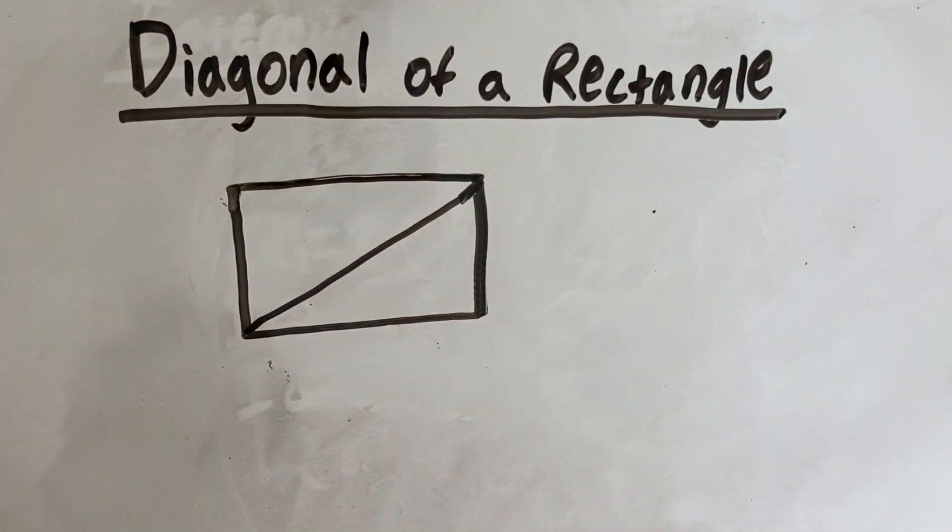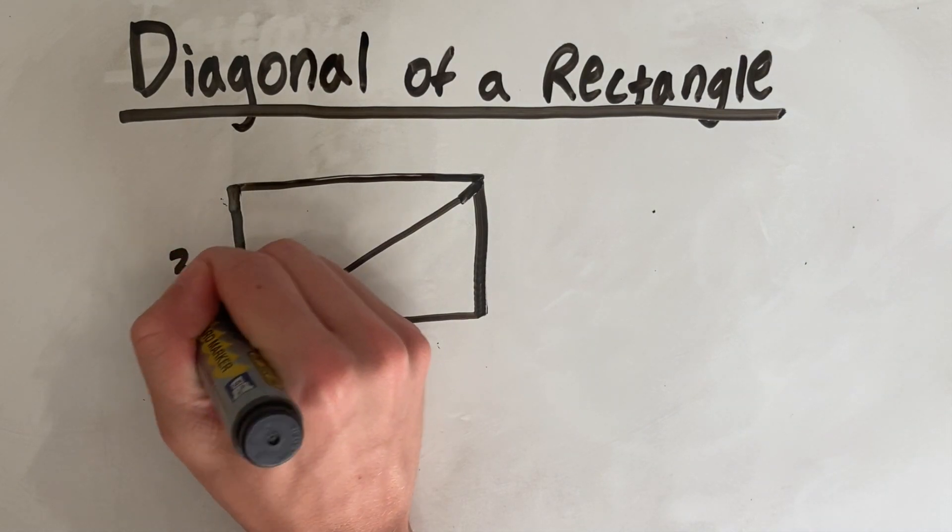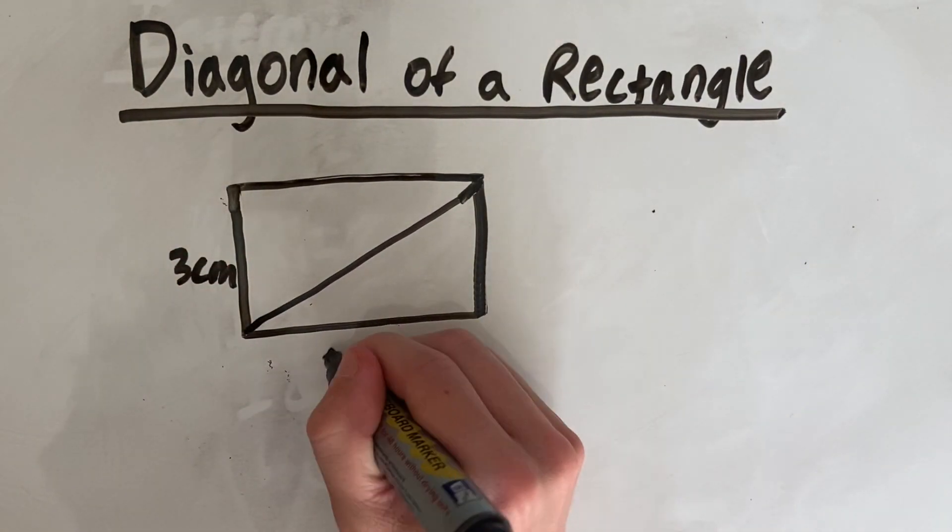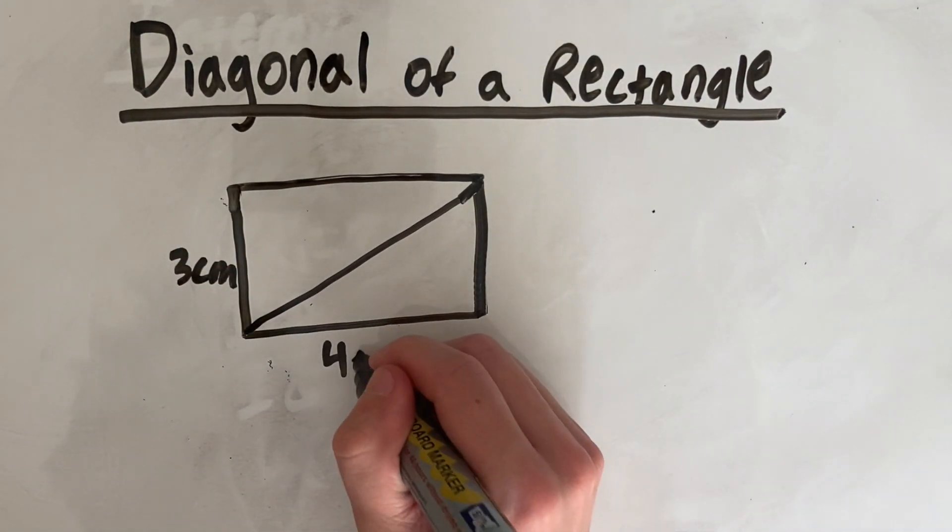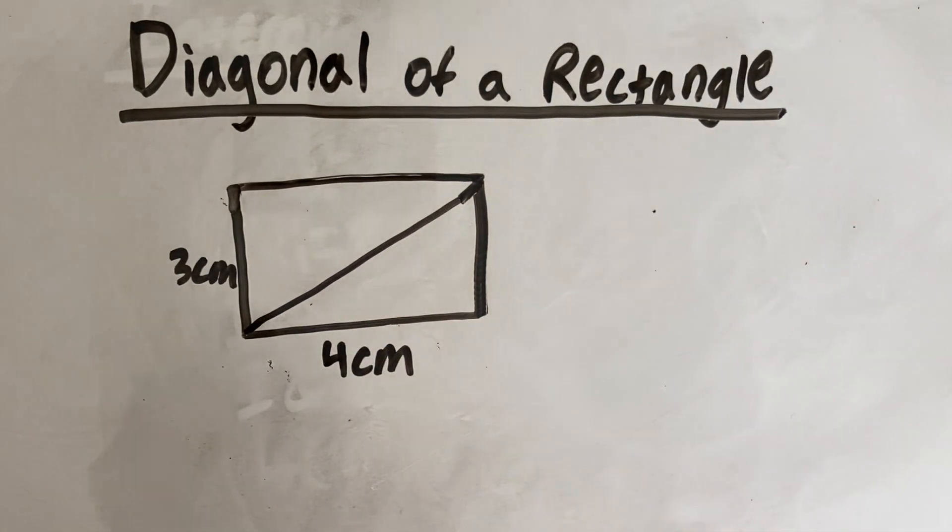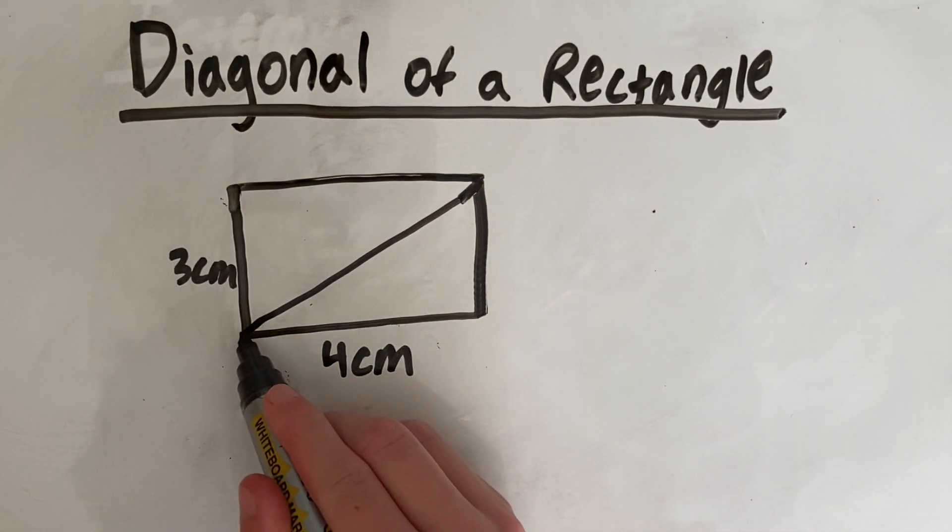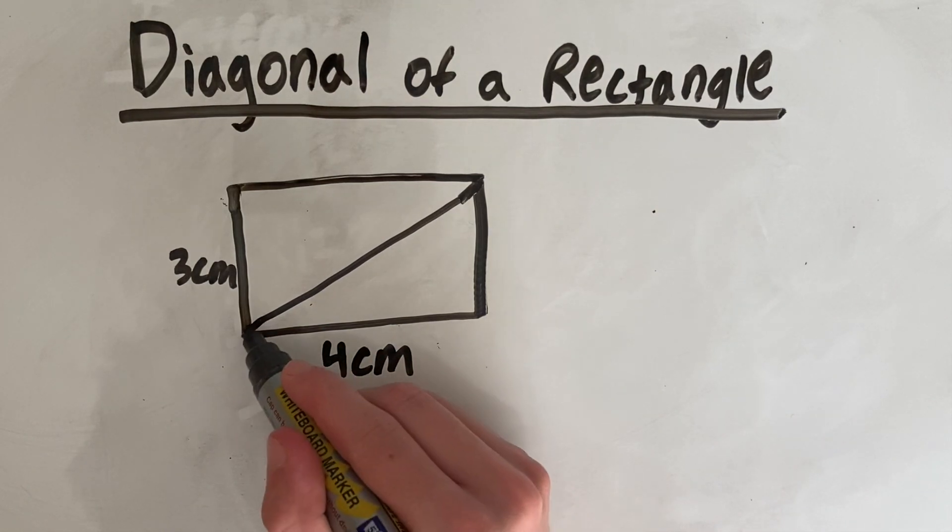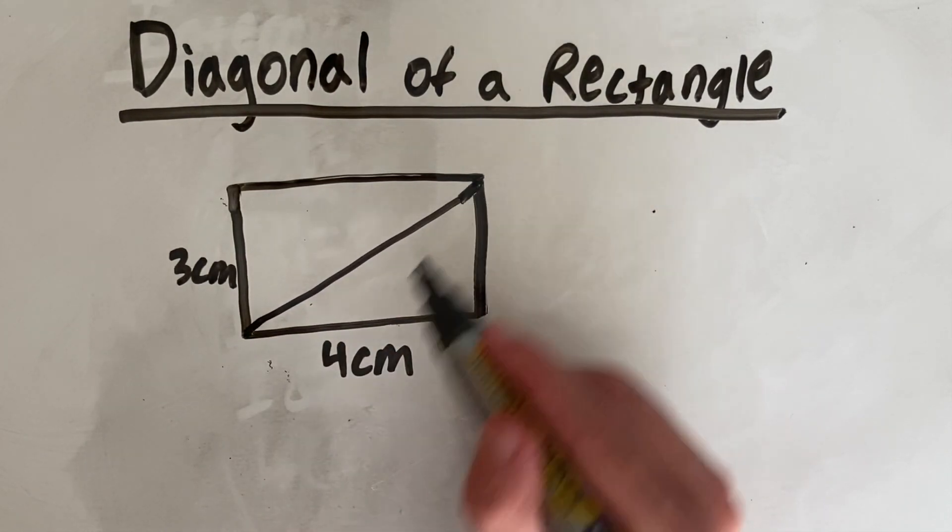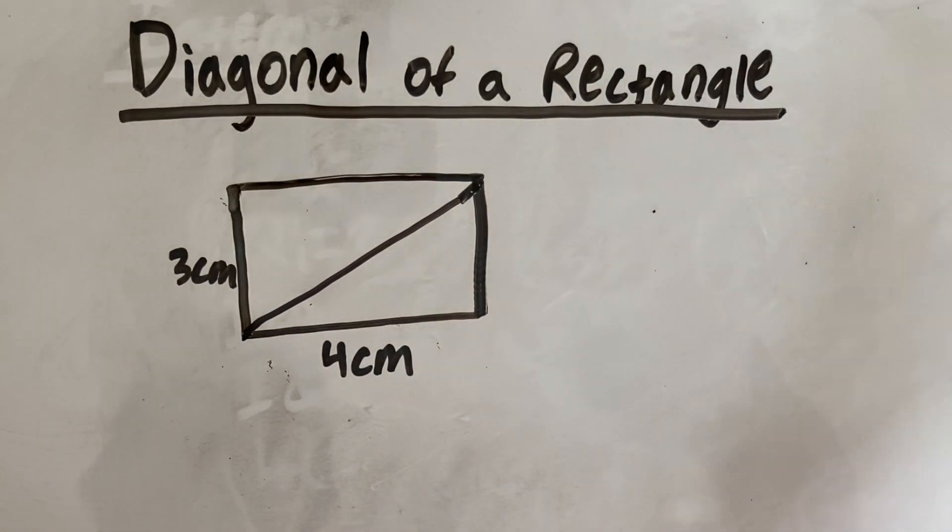So let's say we have a rectangle here with one side that is 3 centimeters and this side over here is 4 centimeters. And we want to find this diagonal length down from this corner to this corner, so the two corners furthest away.